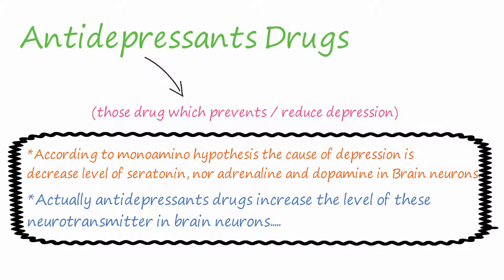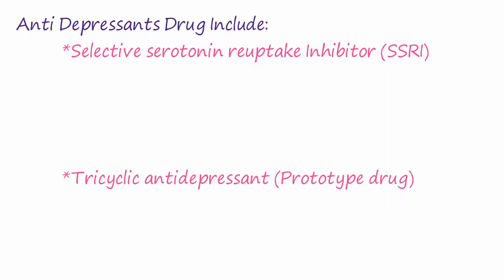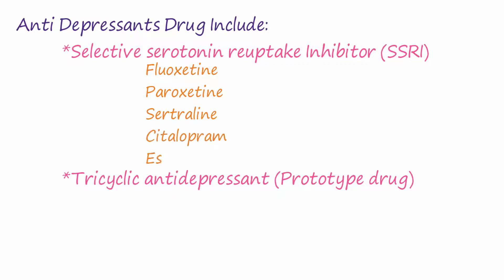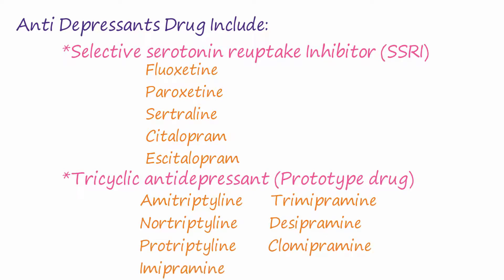Antidepressant drugs include selective serotonin reuptake inhibitors (SSRIs) and tricyclic antidepressants (prototype drugs). SSRIs include fluoxetine, paroxetine, sertraline, citalopram, and escitalopram. Tricyclic antidepressants include amitriptyline, protriptyline, nortriptyline, imipramine, trimipramine, desipramine, and clomipramine.